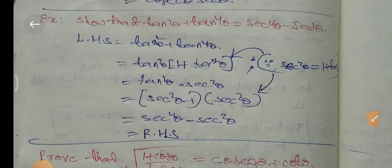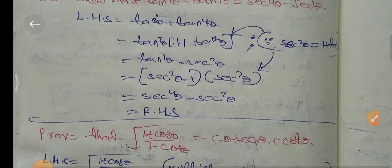Since tan²θ is a common factor in tan²θ plus tan⁴θ, factoring gives tan²θ times (1 plus tan²θ). Here sec²θ is equal to 1 plus tan²θ, so we substitute to get tan²θ times sec²θ.